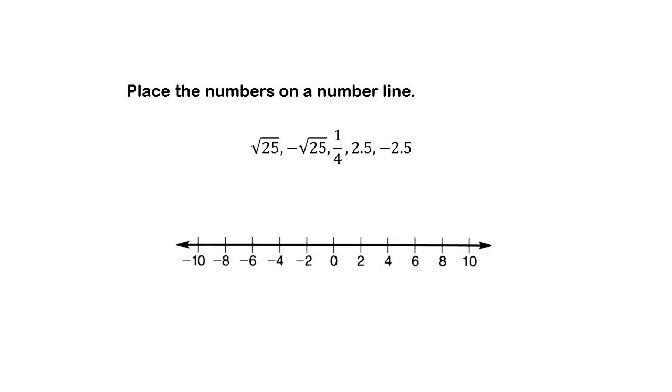So here we have the square root of 25, which is the same thing as 5, because 5 times 5 is 25. So the square root of 25 is just 5, so I'm going to put it on the number line, which would be right here, square root of 25.